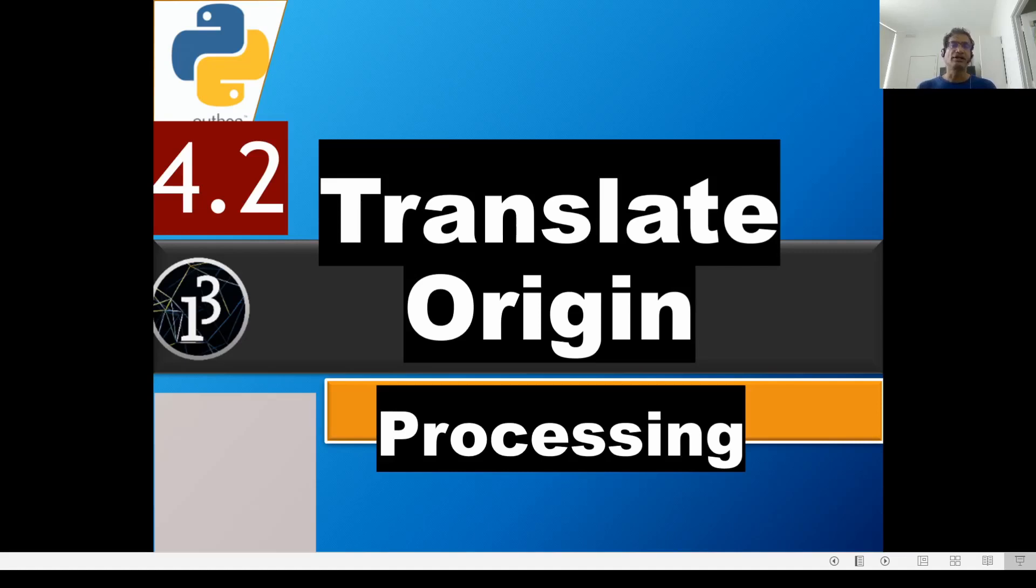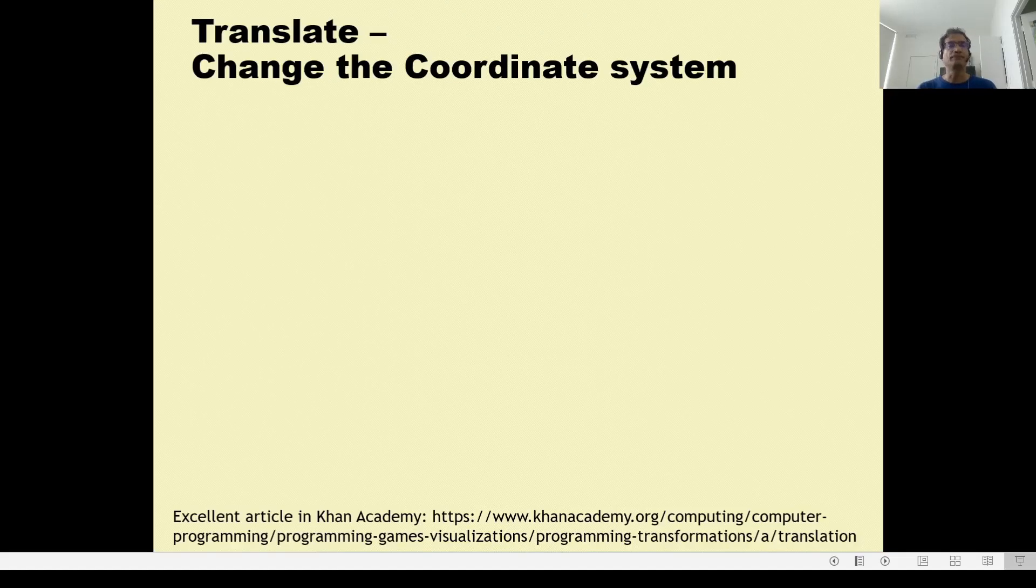That was push matrix and pop matrix. Next, let's look at translate. We're going to translate - playing with the coordinate system or the graph paper if you will. In this case, we're going to change the origin. Let's see how to do that. And why would we do that?